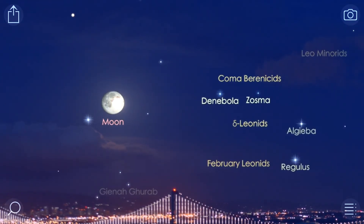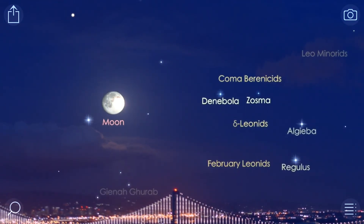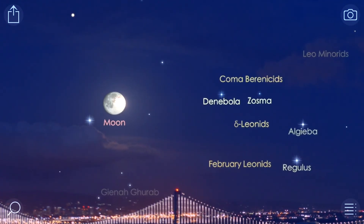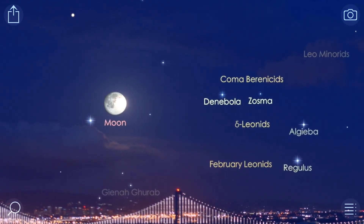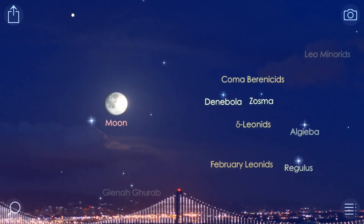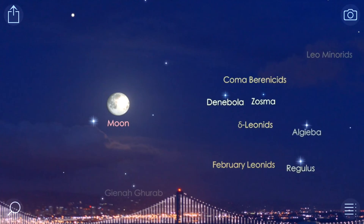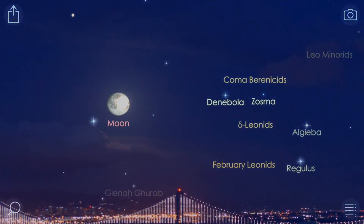Touch the screen with two fingers and drag the sky horizontally until the celestial object you've chosen corresponds with its representation in the app. Due to technical restrictions, you'll probably have to repeat the procedure every time you open the app.